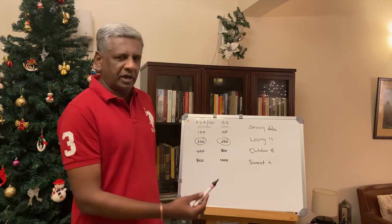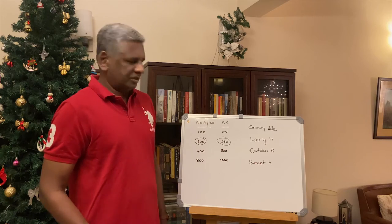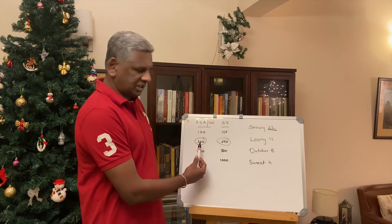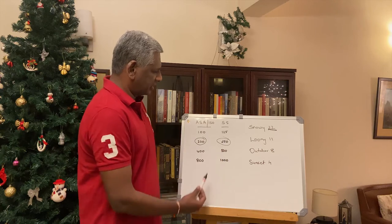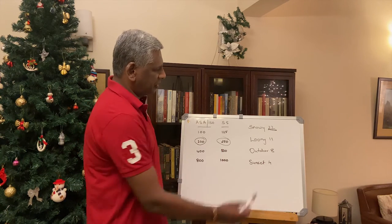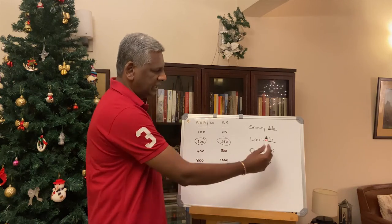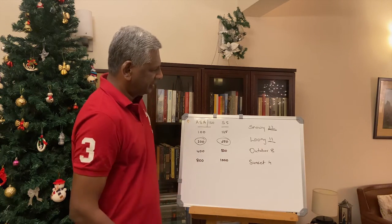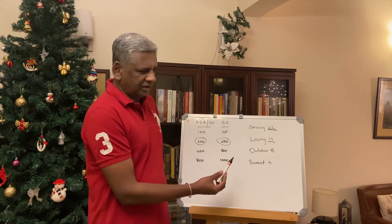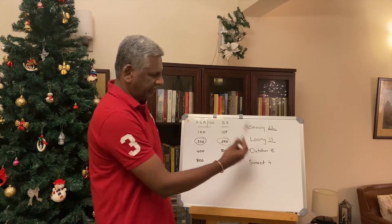The next rule is for if you want to take a photograph of the moon. Again, similarly, the ASA is set at 200, we choose the closest corresponding shutter speed of 250, and we choose an aperture of 11. This is known as the Loony 11 or the Luna 11. So for a snowy shot it's f/22, and for the moon it is f/11.